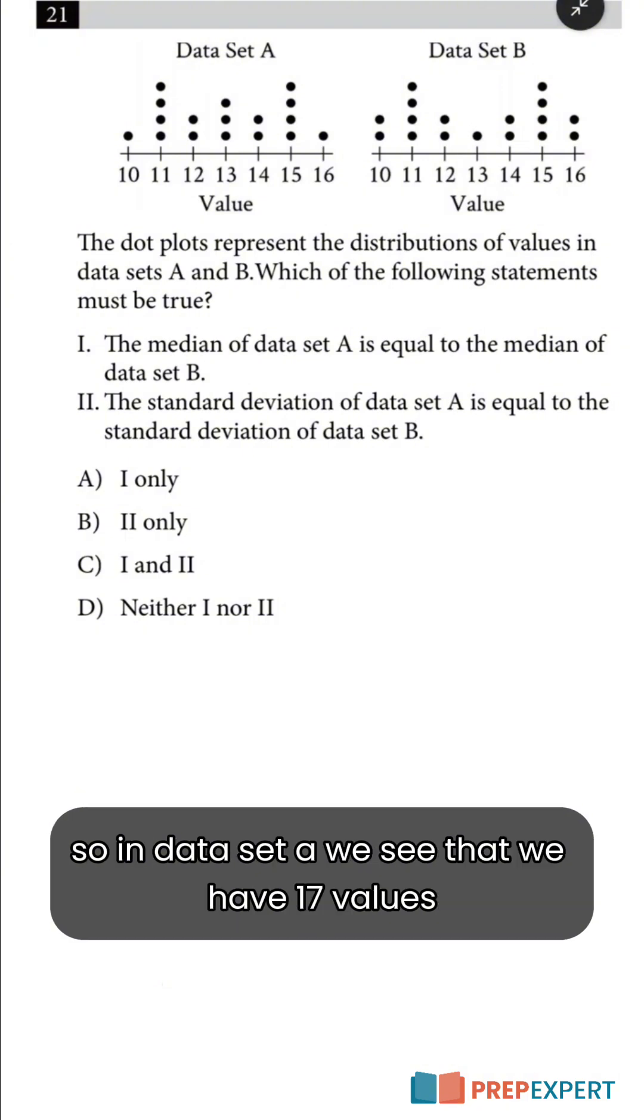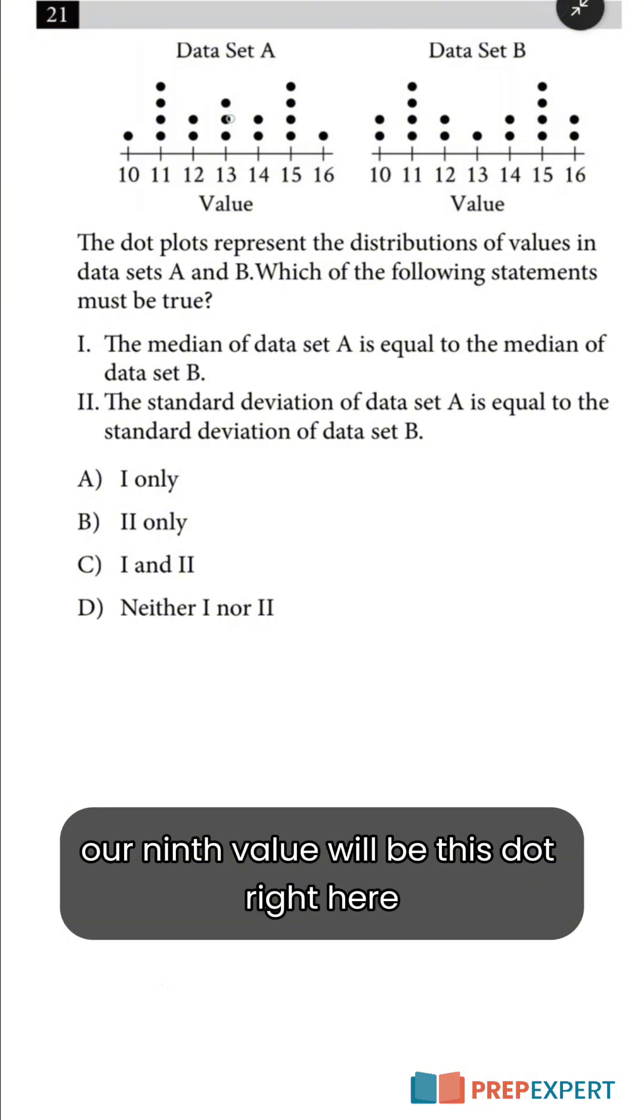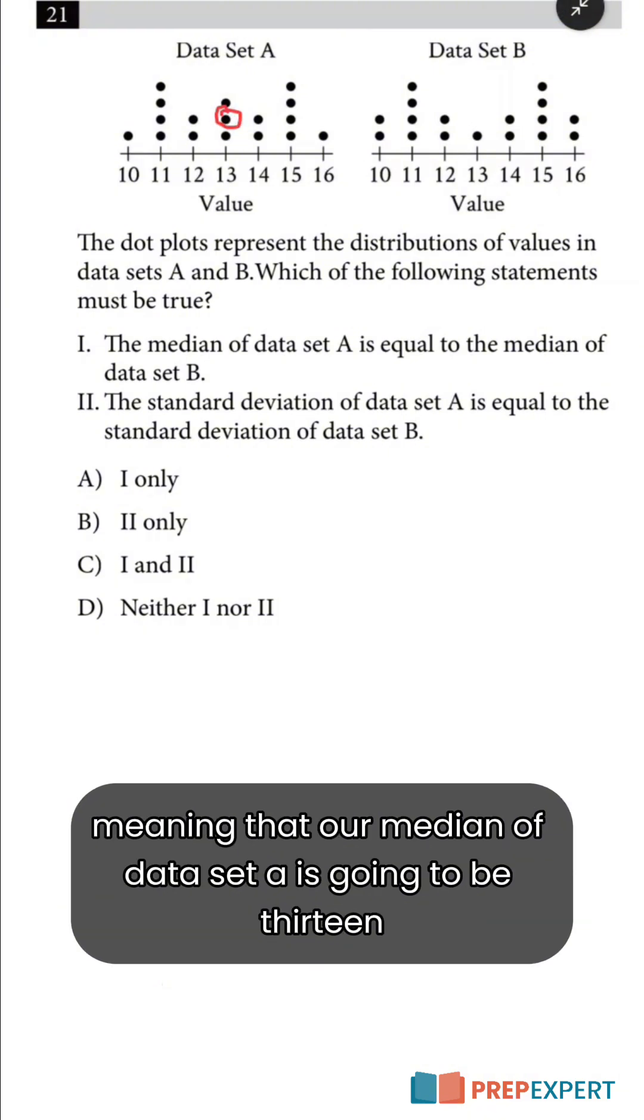In data set A, we see that we have 17 values, so our median is going to be our ninth value. This is because our median is the middle of the data set. Our ninth value will be this dot right here, meaning that our median of data set A is going to be 13.